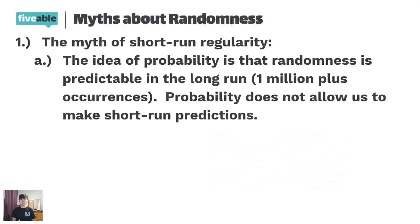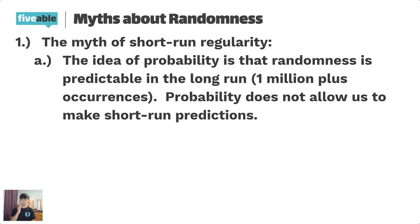One myth about randomness is the idea that you can predict probability in a short number of trials. The main idea is that probability is predictable only over a large number of trials. If you flip a coin four times, you could get three heads and one tail, or even four heads and zero tails — there's always variation. You cannot predict short-term probability, and you need a large number of trials to successfully conclude anything about a probability statement.